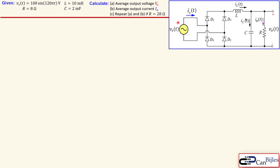This is our circuit we will consider. We have an input voltage sinusoidal of 100 sin(120π·t), so we have an amplitude of 100 and a frequency of 60 Hz. The load is initially 8 ohms and the L and C values for the LC filter are shown here. We would like to calculate the average output voltage and the average output current, and we will also repeat this for a different load of 28 ohms.